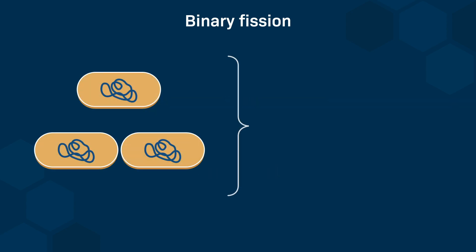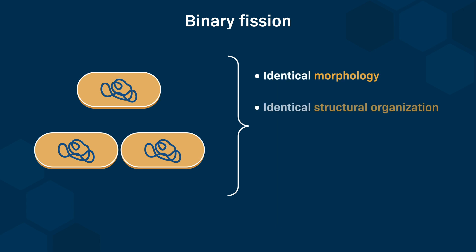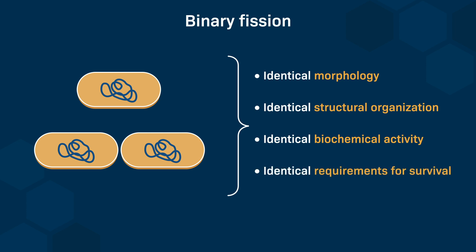Both the original and resulting cells have identical morphology, identical structural organization, identical biochemical activity, and identical requirements for survival and proliferation.